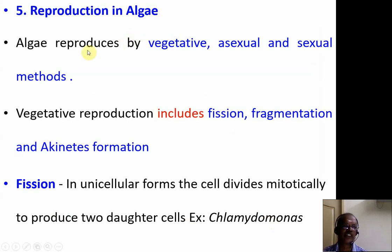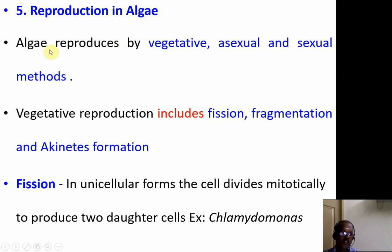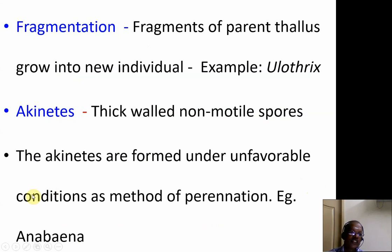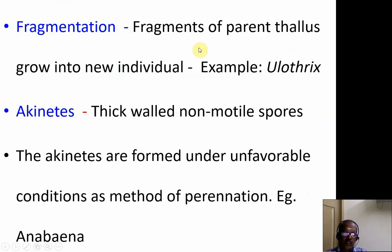Now we come to reproduction in algae. Algae reproduce by vegetative, asexual, and sexual methods. Vegetative reproduction includes fission, fragmentation, and akinete formation. In fission, the cell divides mitotically to produce two daughter cells — example: Chlamydomonas. In fragmentation, fragments of the parent thallus grow into new individuals — example: Ulothrix. Akinetes are thick-walled, non-motile spores formed under unfavorable conditions as a method of perennation — example: Anabaena.